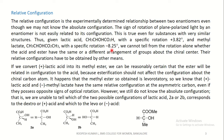So we know that plus lactic acid and minus methyl lactate have the same relative configuration at the asymmetric carbon, even though they possess opposite signs of optical rotation. However, we still do not know the absolute configuration — that is, we are unable to tell which of the two opposite configurations of lactic acid, 2a or 2b, corresponds to the dextro or levo acid.